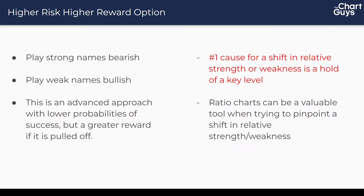There are a few ways to help peg these shifts. The number one cause for a shift in relative strength or weakness is a hold of a key level. If a name comes down, double-bottoms, and turns around, you'll very often see relative weakness shift to relative strength at that moment. Traders see the support level and buy — that's where you get your relative strength. Then once that support level holds, another tranche of traders buys, then another when you confirm the first uptrend, and it snowballs — all from a key support hold or resistance rejection.